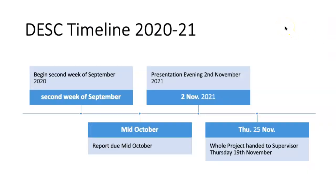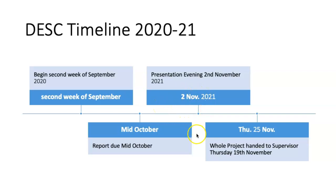Within our school, here are some important dates for our 2021 timeline. You began the EPQ in the second week of September. One major date is that the report — the 5,000-word written report, or the artifact and artifact report — will be due in mid-October 2021. Then we will have a presentation in very early November. The entire project — consisting of the presentation, the report and the production log — will be finished for the 25th of November 2021.